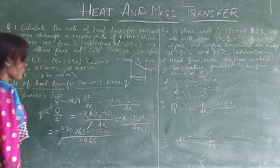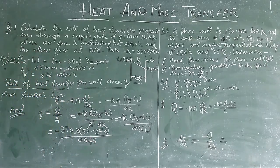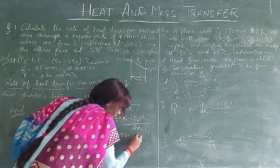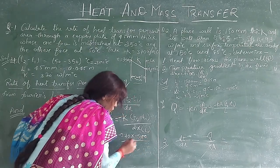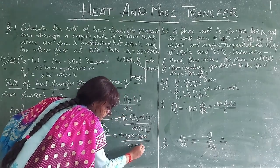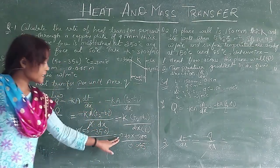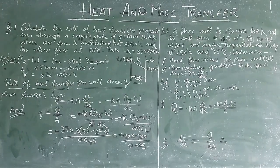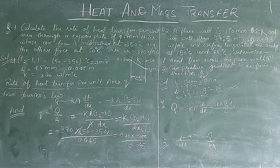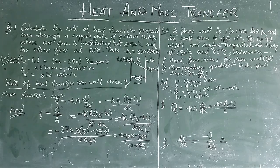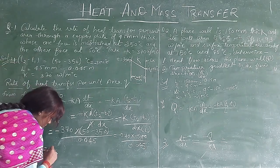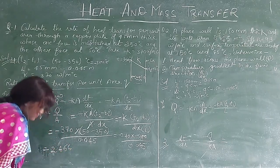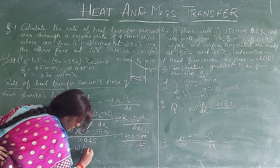K value is 370, T2 minus T1 is 300, divided by 0.045. Now minus and minus becomes plus. Now we can solve this. So the value that we get is 2.466 into 10 to the power 6 watt per meter square.